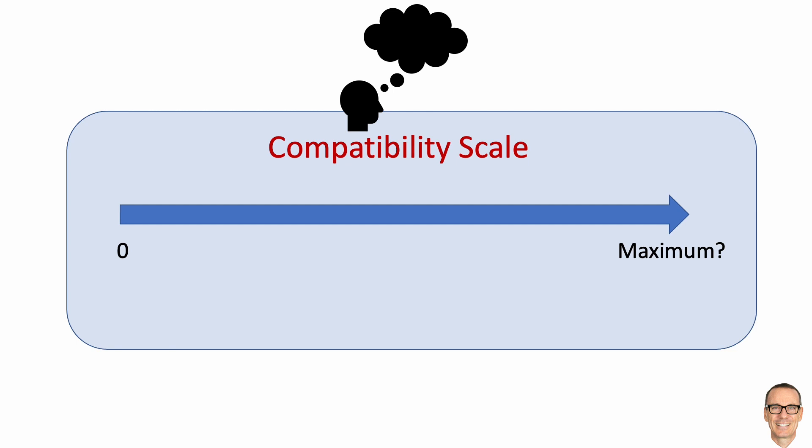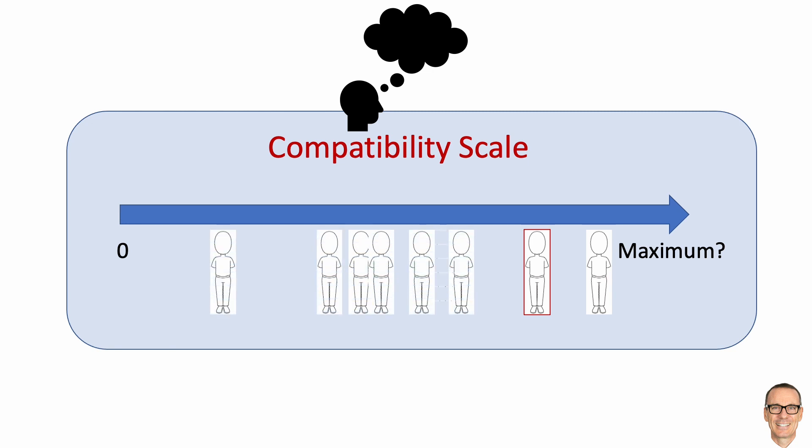You might find a person who you think is very compatible, but you may also wonder if there are others out there who are even more compatible. The problem is at the start, you don't really know where most people sit on this compatibility scale. What's the average compatibility of people? What's the variance amongst the population? So how do you choose?